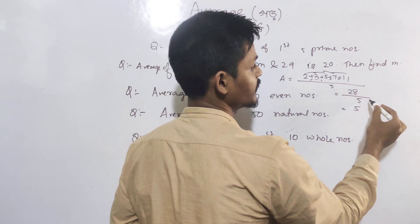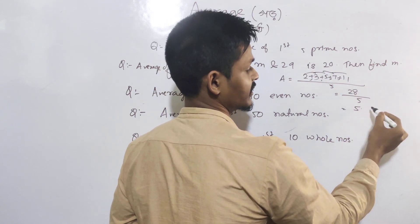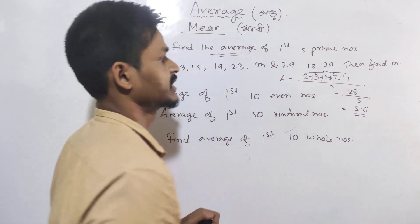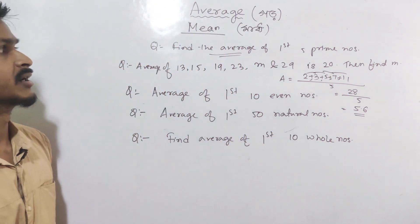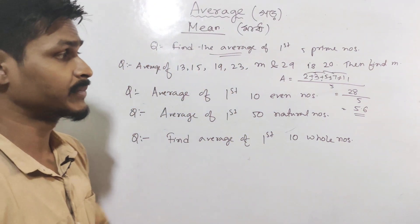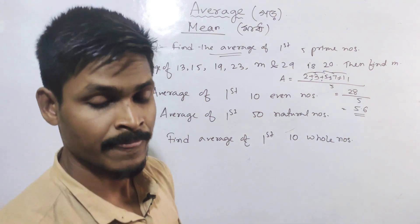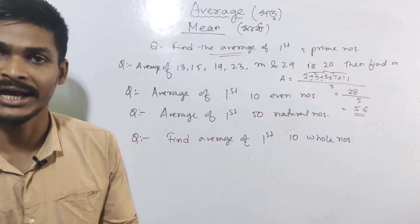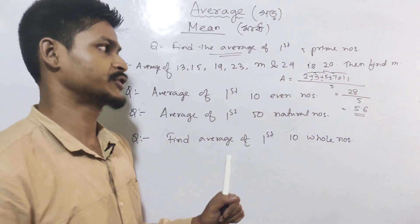28 divided by 5 equals 5.6. So the average of the first 5 prime numbers is 5.6.